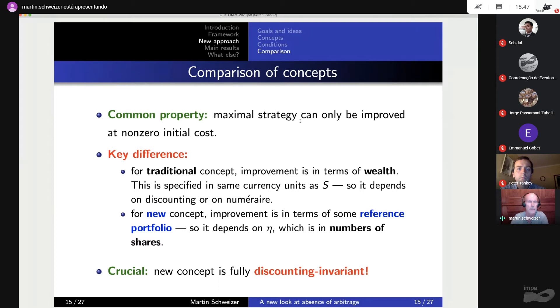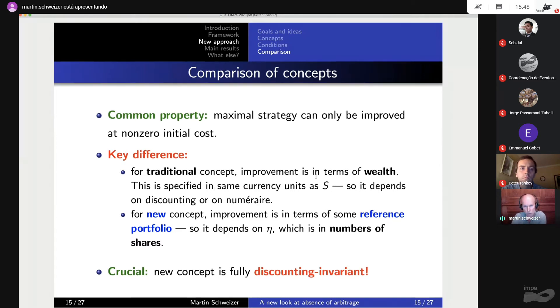Then this is a reference portfolio as soon as the sum of your non-negative prices is strictly positive and also its left limits are strictly positive. In other words, with non-negative prices, the market portfolio is such a reference portfolio unless your market completely collapses at some finite time point. And of course, if you have the classic setup where you have non-negative prices and the bank account, then adding up all the coordinates here gives you at least one. So that's always satisfied. So if you compare the concepts, then what is common is that a maximal strategy can only be improved at the non-zero initial cost. But the difference is how do we measure improvement? Traditionally, the improvement is in terms of wealth and wealth is in the same currency units as your stock prices. So when you discount, this changes. For our new concept, the improvement is in terms of a reference portfolio. So it depends on some eta and this is in numbers of shares. If you now discount your prices, numbers of shares remain numbers of shares. So by construction, this concept and everything we get from it is completely discounting invariant.